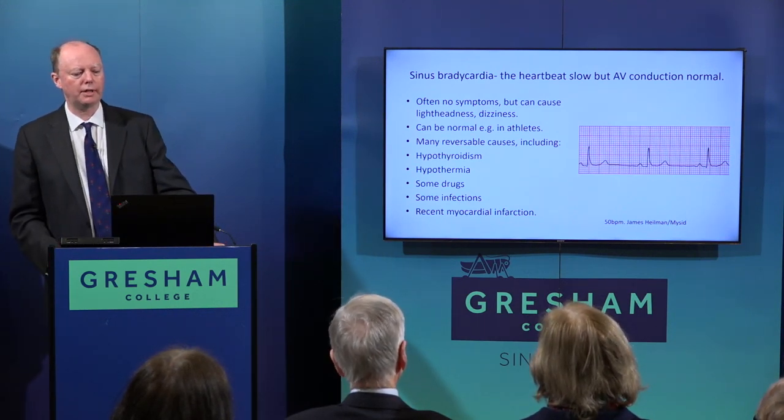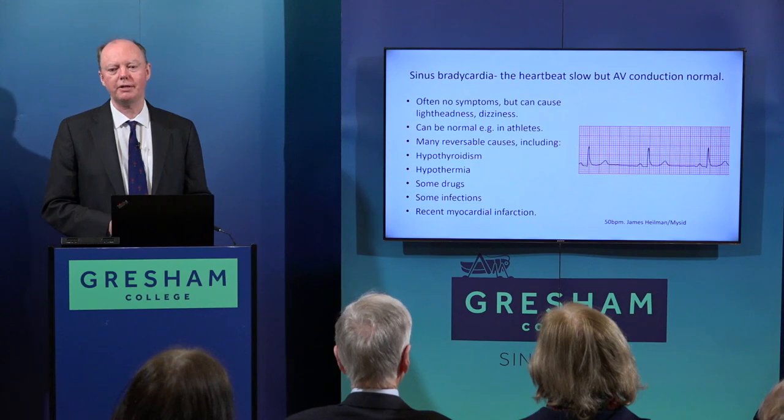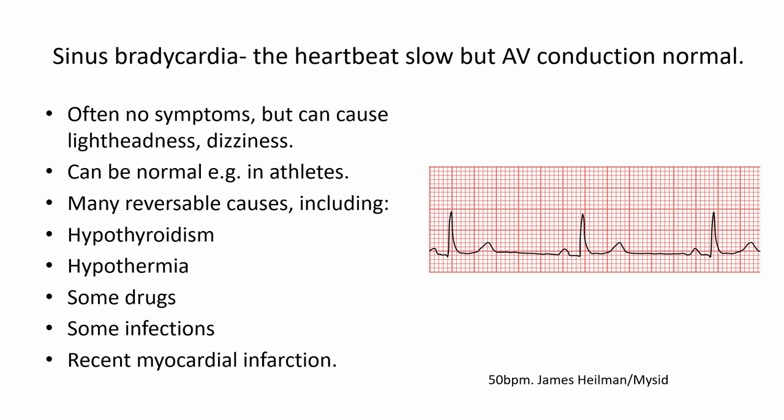Starting with things that can look abnormal: the first group is when the heart goes too slowly. The first of these is sinus bradycardia, where the heart is going slowly but the rhythm itself is completely normal — normal P wave, normal interval, normal QRS, normal T wave — just going too slowly. This could simply be someone who is an Olympic athlete; that's just their normal heart rate.